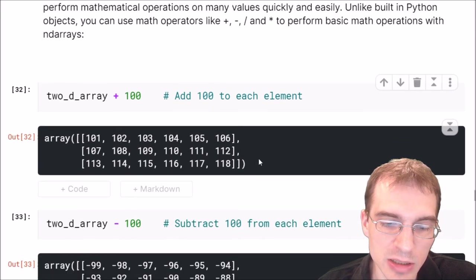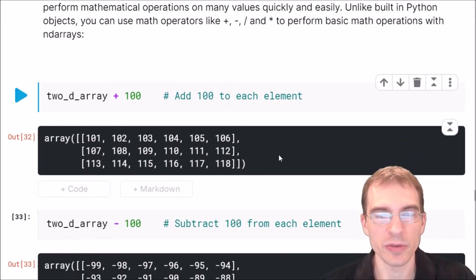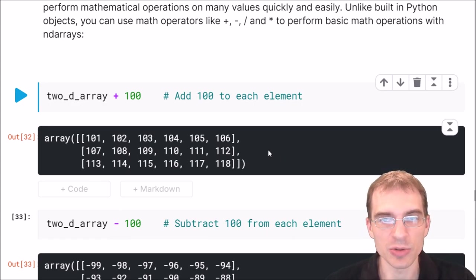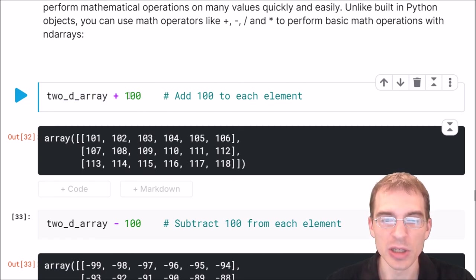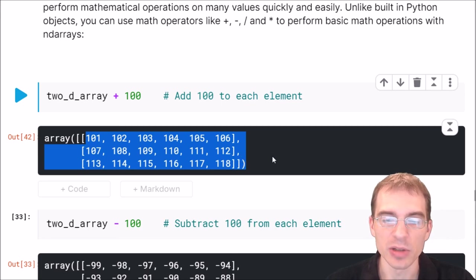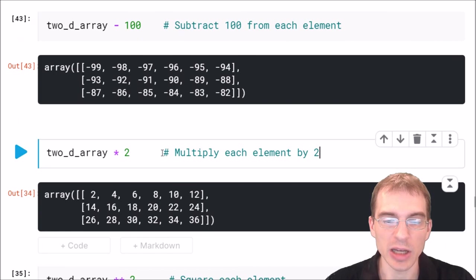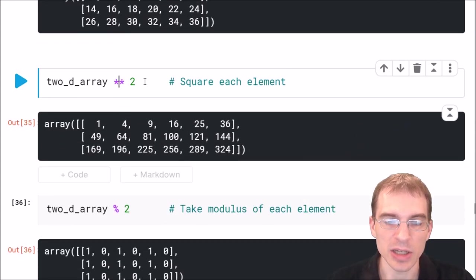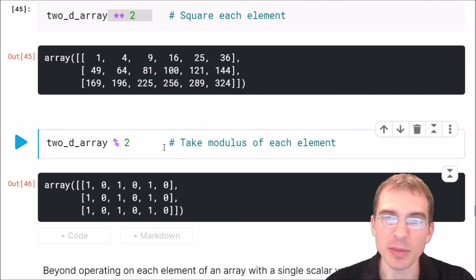The nice thing about NumPy arrays is they do things element-wise. If you want to add scalar values, it will do that to every item in the whole array by default. For instance, if we took our array from earlier and we wanted to add 100 to every single value in the whole array, all we have to do is take the array and say plus 100, and it will know it's supposed to add 100 to every element without having to do any kind of explicit for loop. When we run that, we see the same array, but everything has been increased by 100. Similarly, we can subtract 100. We could multiply the whole thing by 2 at every element, or we could do exponentiation. We're going to take the whole array and square everything in it. You can take the modulus by using percent. If you do modulus 2, that will show you which numbers are odd and which are even.